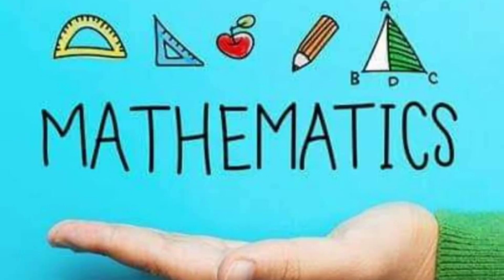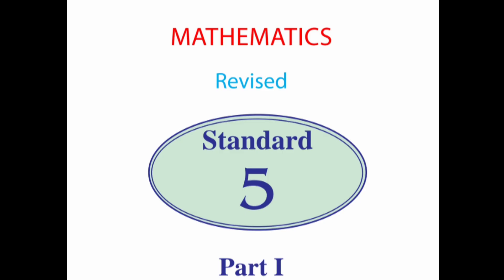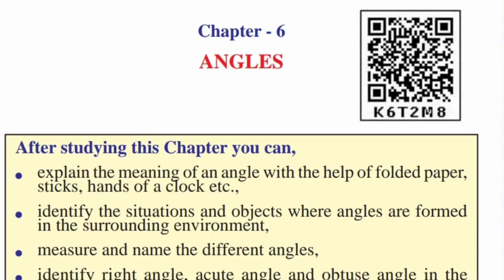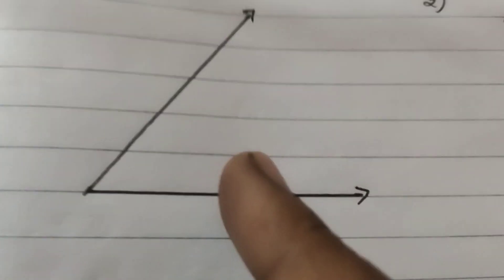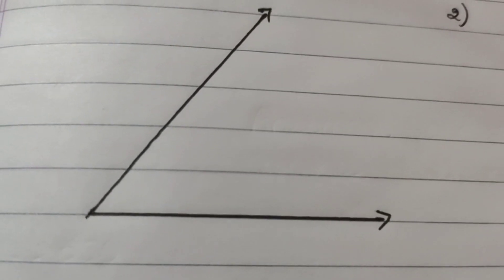Hello everyone, welcome to Maths class, fifth standard, part one. Let us continue with the lesson — Chapter 6: Angles. Question five: draw any six angles using a scale and measure them using a protractor. You only draw with the scale; use the protractor only to measure. Let's do that.